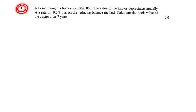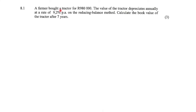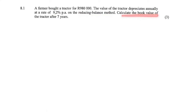8.1. A farmer bought a tractor for 980,000 Rand. The value of the tractor depreciates annually at a rate of 9.3% per annum on the reducing balance method. Calculate the book value of the tractor after 7 years. So in the reducing balance method,